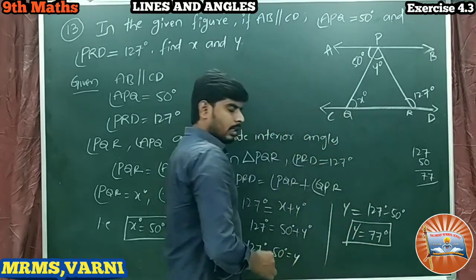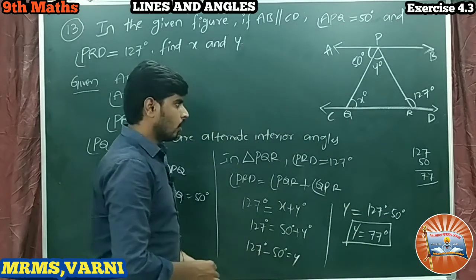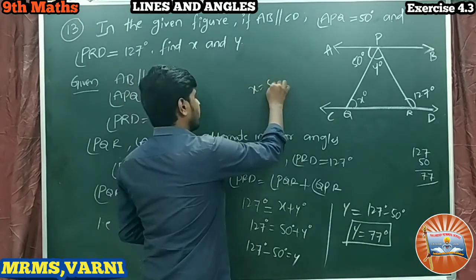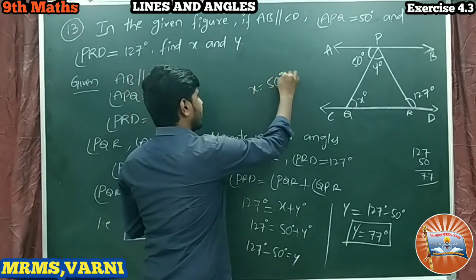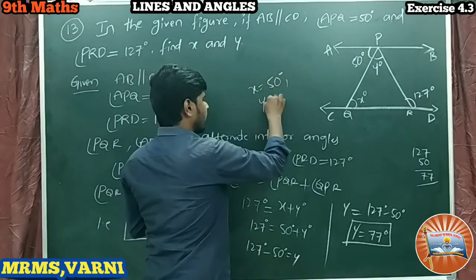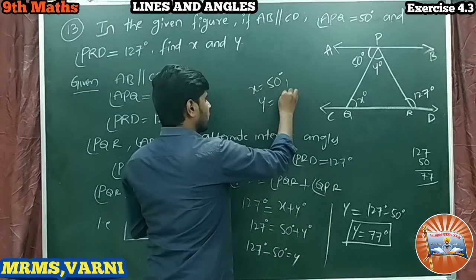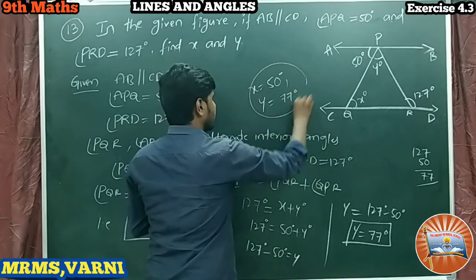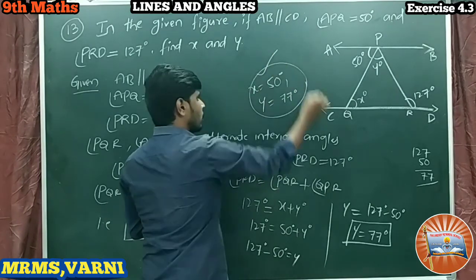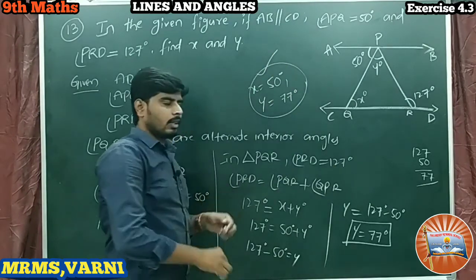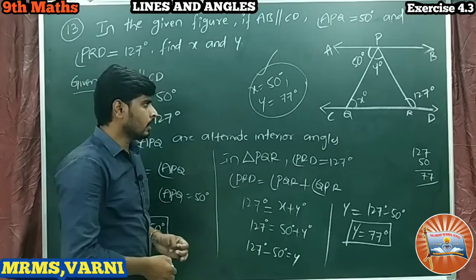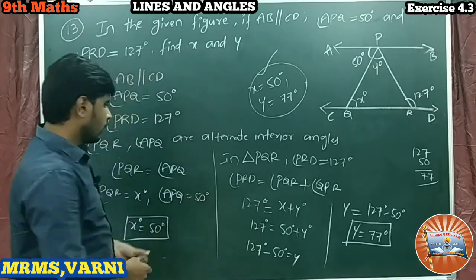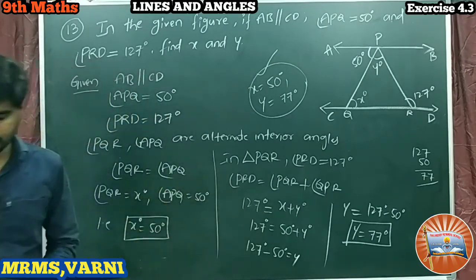Is it clear? X value we got 50 degrees and Y value we got 77 degrees. This is the solution. I hope you understand.